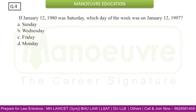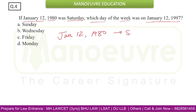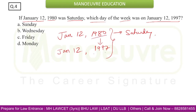Focus on this one: If January 12, 1980 was Saturday, which day of the week was January 12, 1997? First, find how many years are there from 1980 to 1997 — that is 17 years total. Now, some of those years will be leap years. We take 17 odd days for 17 years, but we must identify how many leap years are in that duration.